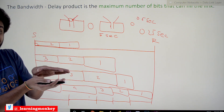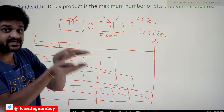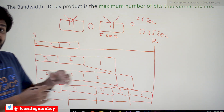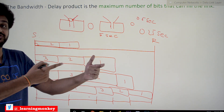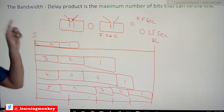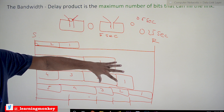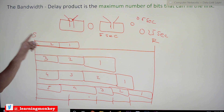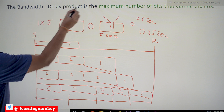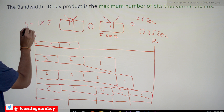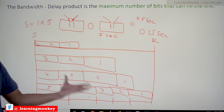The bandwidth is the physical property — the number of bits that can be transmitted per second. The number of bits that can be filled within the link is determined by bandwidth multiplied by delay: 1 bit/second × 5 seconds = 5 bits. This is the bandwidth-delay product. The entire channel can be filled with 5 bits.